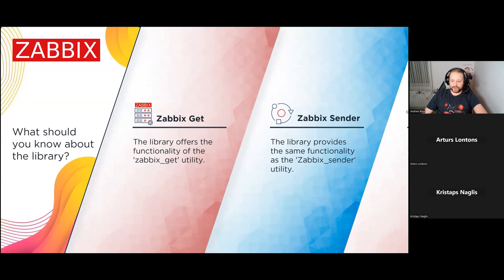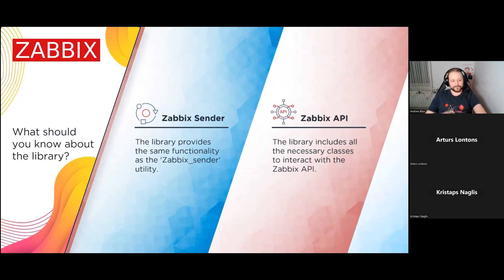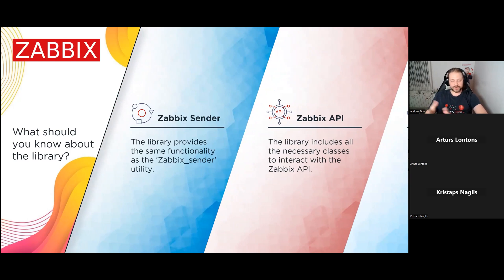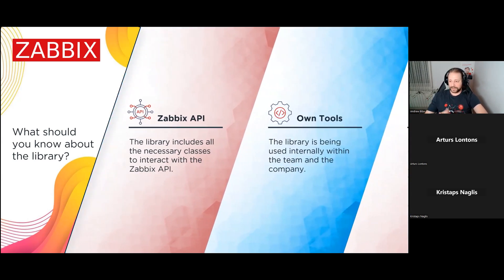Zabbix utils consists of three classes: Zabbix Get, Zabbix Sender, and Zabbix API. Zabbix Get is a utility to work with the agent, so you can get data directly from the agent and process it. Zabbix Sender is a utility to send data - for example, if you get data from the agent, process it, and send it to Zabbix using Zabbix Sender, using a Zabbix trapper item. And the most interesting part is, of course, Zabbix API - I guess this is the main reason the library was created.